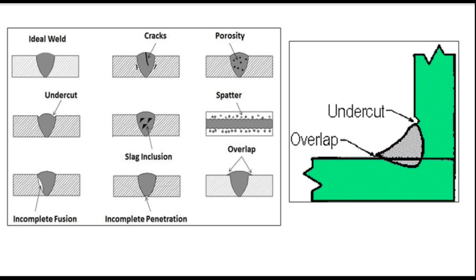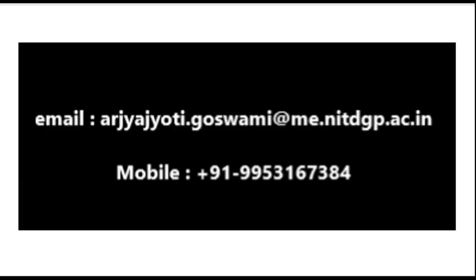In the next video we will talk about different methods of testing welded joints. There are basically two classes of testing: destructive testing, where we break the weld to find mechanical properties but the part is wasted, and non-destructive testing, which we will discuss in detail. Meanwhile, read ahead and if any doubts arise you can contact me. Stay healthy, stay safe.